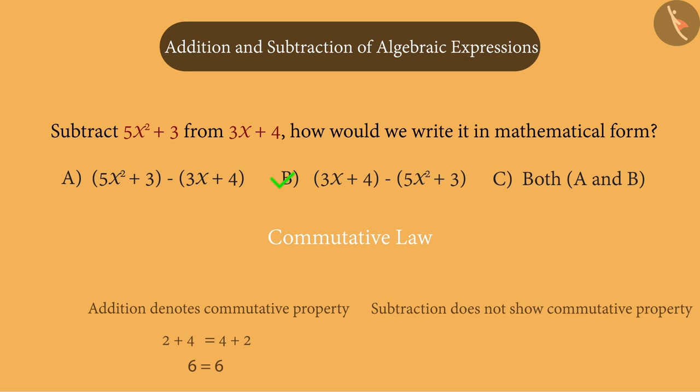For example, 2 minus 4 is similar to negative 2. But 4 minus 2 is similar to positive 2. This means that 2 minus 4 and 4 minus 2 are not the same. Commutative property is not true for subtraction.